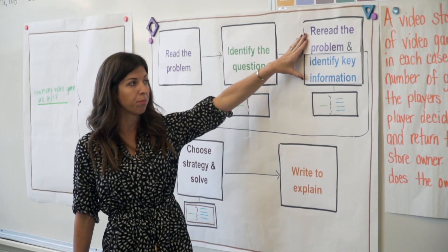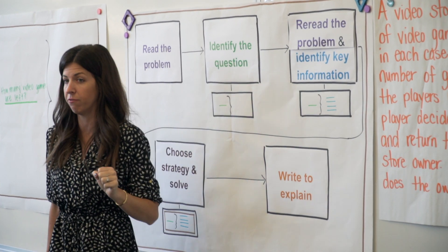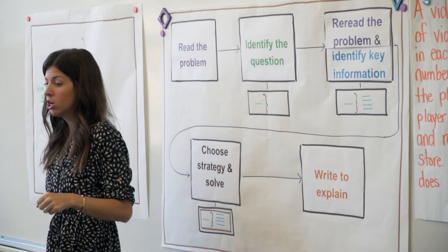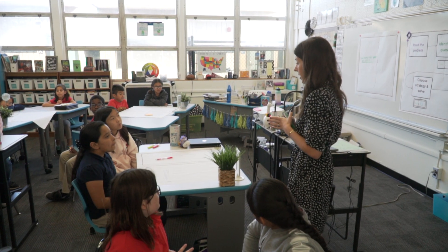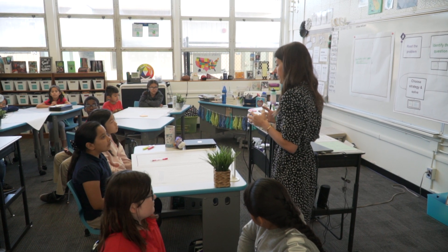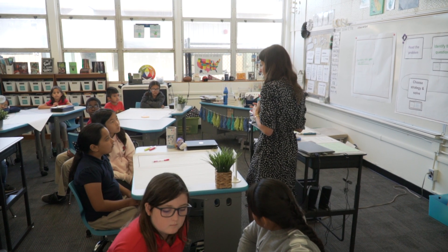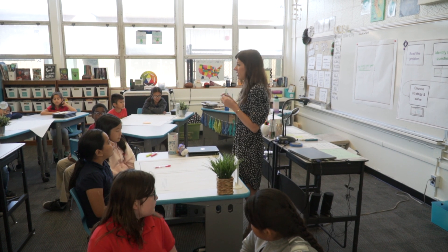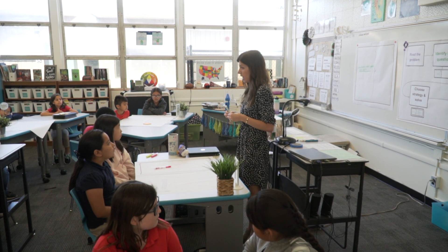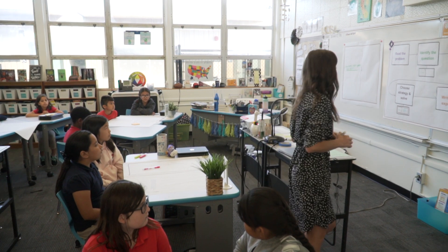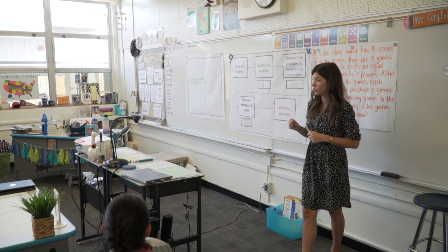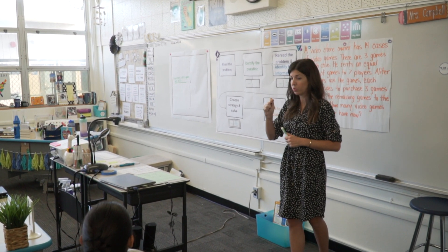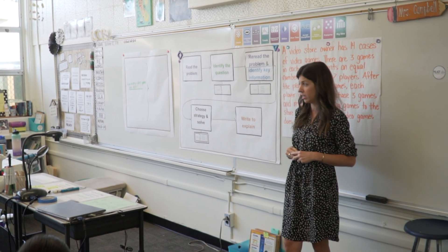Now we're going to re-read the problem and identify the key information. We're going to use our tool of highlighting to identify that information. When you guys are collaborating, make sure you're coming to a consensus and agreement that this is the key information you want to highlight. The scribe will go through and highlight once you've reached that consensus.